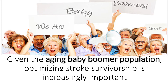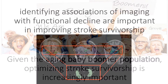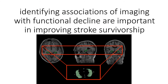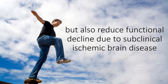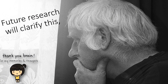Given the aging baby boomer population, optimizing stroke survivorship is increasingly important. Identifying associations of imaging with functional decline is important in improving stroke survivorship. It seems reasonable that treatments can be implemented not only to reduce the risk of clinical events, but also to reduce functional decline due to subclinical ischemic brain disease. Future research will clarify this.